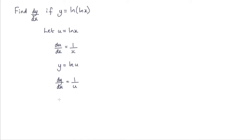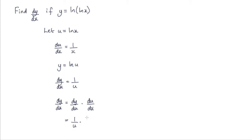What we're looking for is dy by dx. Applying the chain rule, dy by dx will be dy by du multiplied by du by dx. Now dy by du is 1 over u, and du by dx is 1 over x.